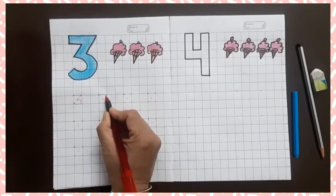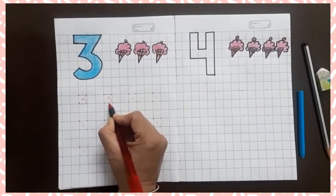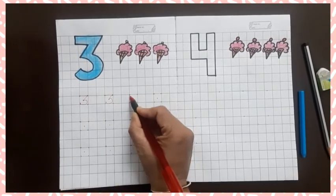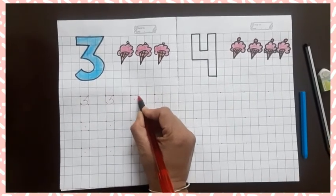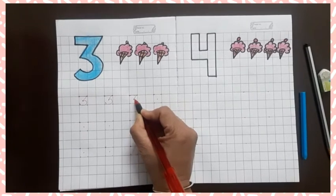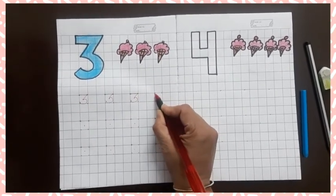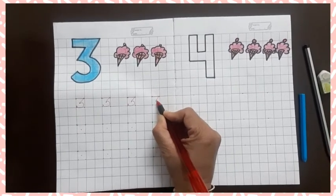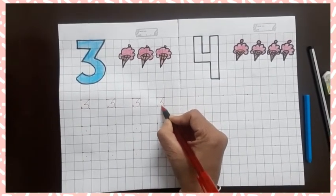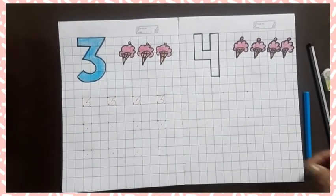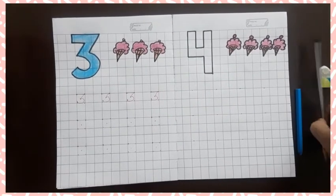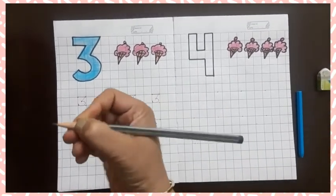Sleeping line, slanting line and curve. Sleeping line, slanting line and curve. Sleeping line, slanting line and curve. Now hold the pencil like this.